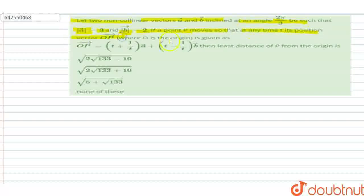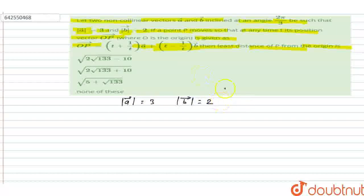The position vector OP is given as OP = (t + 1/t) vector a + (t - 1/t) vector b. We are given that |vector a| = 3 and |vector b| = 2, and the angle between vector a and vector b is theta, where theta = 2π/3.